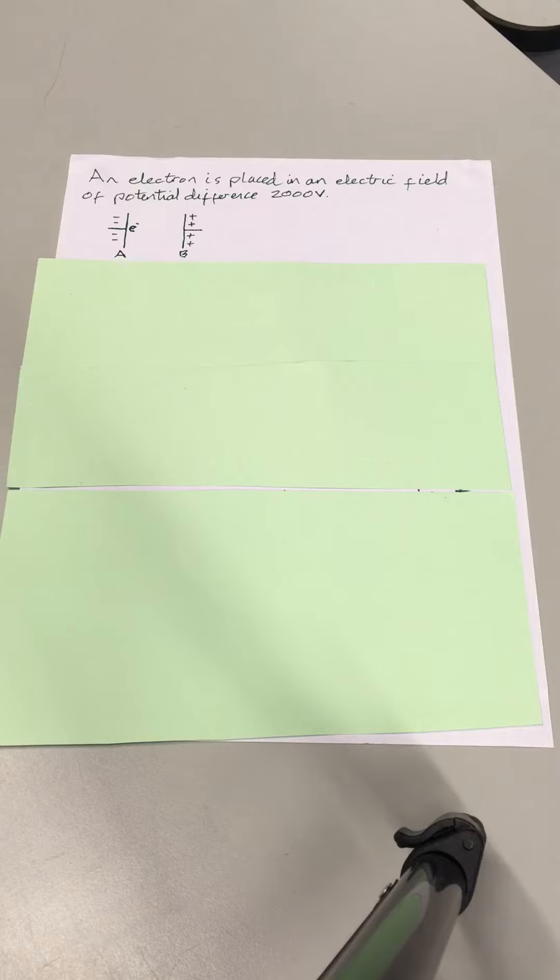This is a typical type of example where we've got an electric field set up between plates A and B. A is negatively charged, B is positively charged, and the potential difference across the plates is 2000 volts. There's an electron placed between the plates.